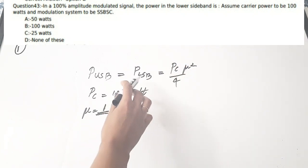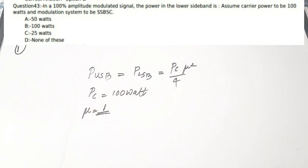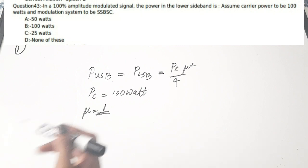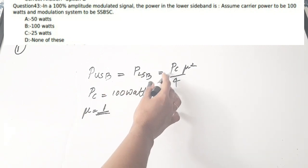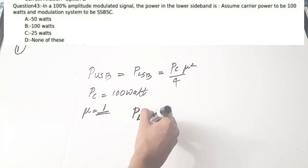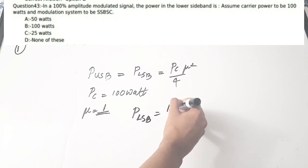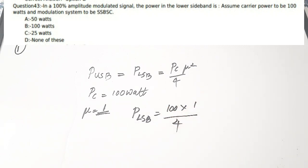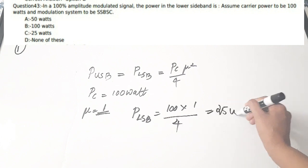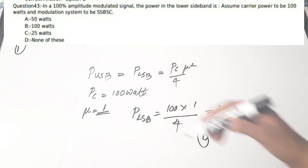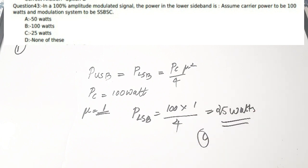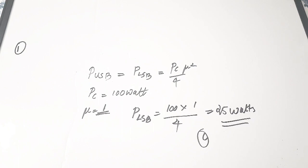Actually we need to find the power in the lower sideband, P_LSB. Using the equation P_LSB = P_c × mu² / 4 = 100 × 1 / 4 = 25 watts. So the correct answer is option C. There is a separate video on amplitude modulation covering all power and bandwidth equations in the analog communication playlist. First question correct answer: option C.